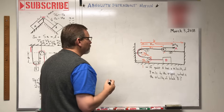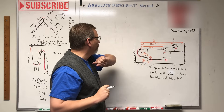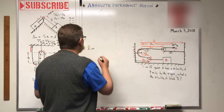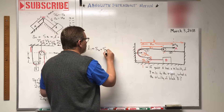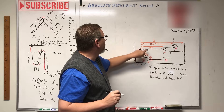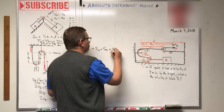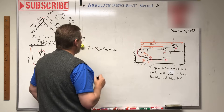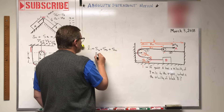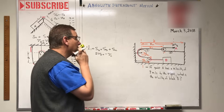Let's write an equation for rope one. L1 equals: starting down here, we've got S-D and S-D — so two S-D's — and then this piece here is S-C. Taking the time derivative, two velocities of D equals negative velocity of C.